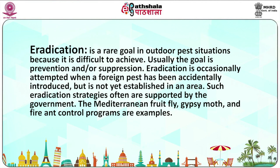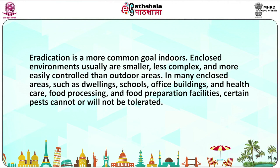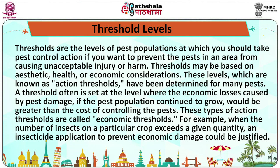Eradication is occasionally attempted when a foreign pest has been accidentally introduced but has not yet established in an area. Such eradication strategies are often supported by the government. Mediterranean fruit flies, gypsy moth, and fire ant control programs are examples. Eradication is more common indoors compared to outdoor ones. In closed environments there are usually smaller, less complex issues and they are more easily controlled. In many enclosed areas such as dwellings, schools, hotels, office buildings, food processing and food preparation areas, certain pests cannot be tolerated. There are certain threshold levels — the levels of pest population at which you should take pest control action to prevent pests from causing unacceptable injury or harm.